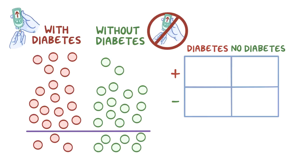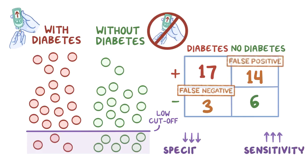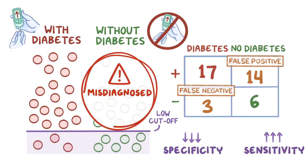On the other hand, if we pick a low cutoff value, we might end up with only three false negatives but 14 false positives, so the test has high sensitivity and low specificity, and a large number of people who don't have diabetes will be misdiagnosed. That can lead to extra anxiety and a lot of extra expense related to unnecessary medical workups for something they don't even have.